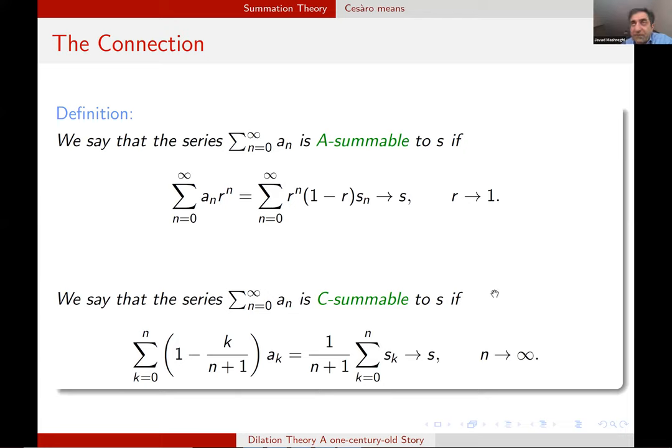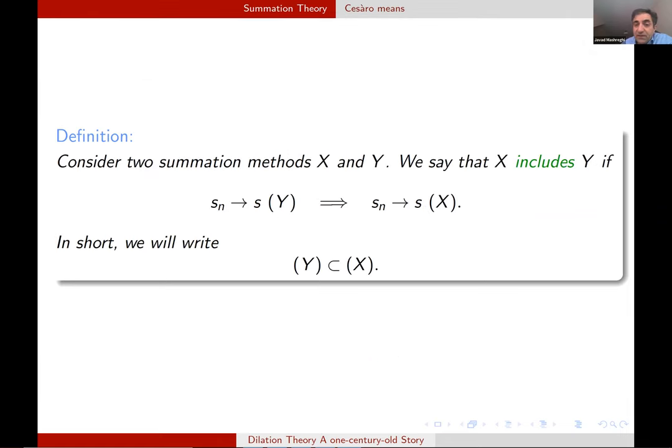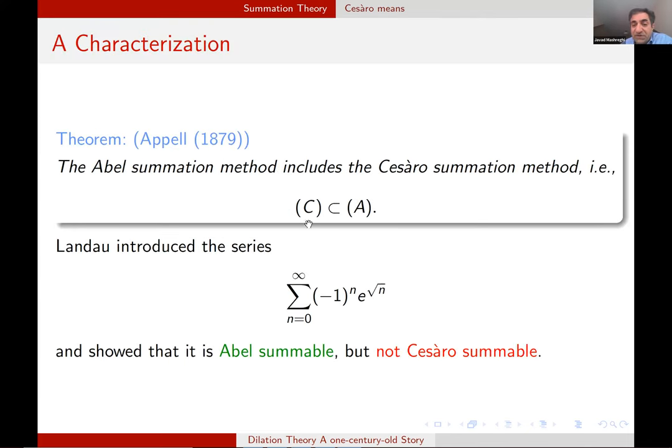To compare, we say that Y is stronger than X or X is included in Y if something is convergent in... sorry, X is stronger. If something is convergent with respect to Y, it also converges with respect to the summation method X. And I will write it this way. So to repeat, this means that the summation method X covers all the sequences covered by Y and maybe even more. For the two we saw up to now, Abel and Cesàro, Cesàro is included in A. And the inclusion is even strict by an example of Landau. He introduced this series, which is Abel-summable, but not Cesàro-summable.